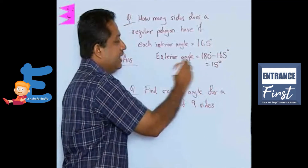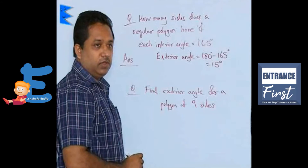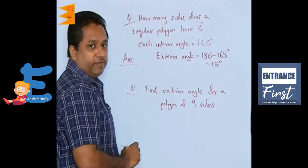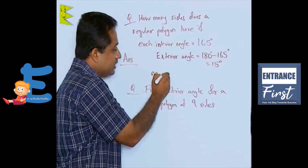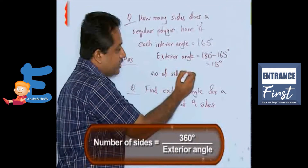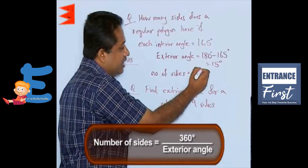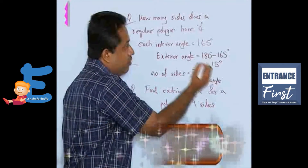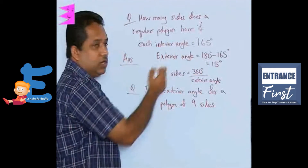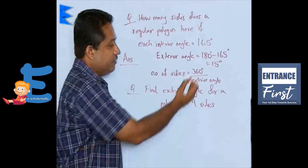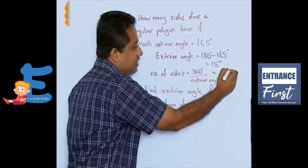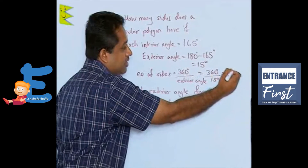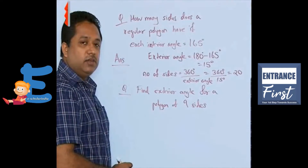The exterior angle has been found as 15°. To find the number of sides, we use the formula: number of sides = 360° divided by the exterior angle. The exterior angle was not given directly, but we found it as 15°. Substituting, we get 360 divided by 15, which gives us 20. So this polygon has 20 sides.